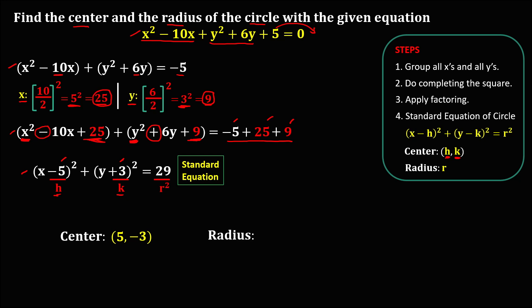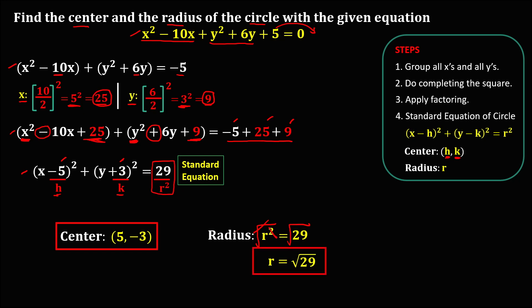To find the radius, we equate r squared equals 29. Then to solve for the radius, just take the square root — so r equals the square root of 29. These are now the center and the radius of this circle.